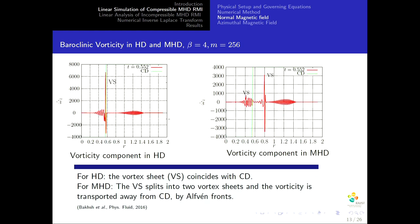We show here the baroclinic vorticity — the vorticity that exists on the interface. For the hydrodynamic case, we can see the vortex sheet exactly at the position of the contact discontinuity. In the presence of the magnetic field, we have two vortex sheets split away from the contact discontinuity. Physically, two Alfvén fronts remove this vorticity and transport it away from the interface, causing the suppression of the instability.